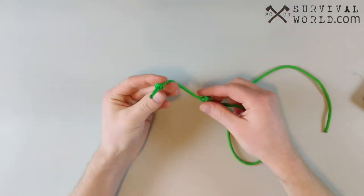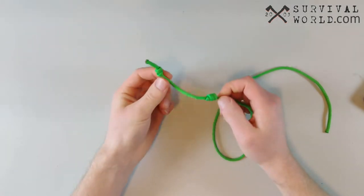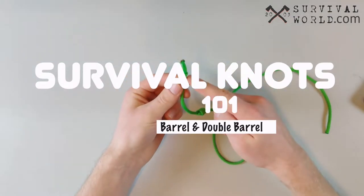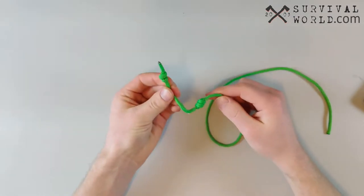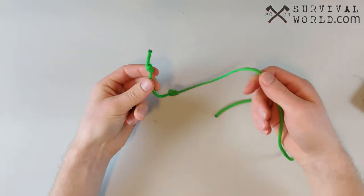Hey everybody, this is Tristan from Survival World and today's tutorial in our survival knot series is on the barrel and the double barrel knot, or sometimes improperly called the blood knot, which is actually just a variation of the double fisherman's knot.